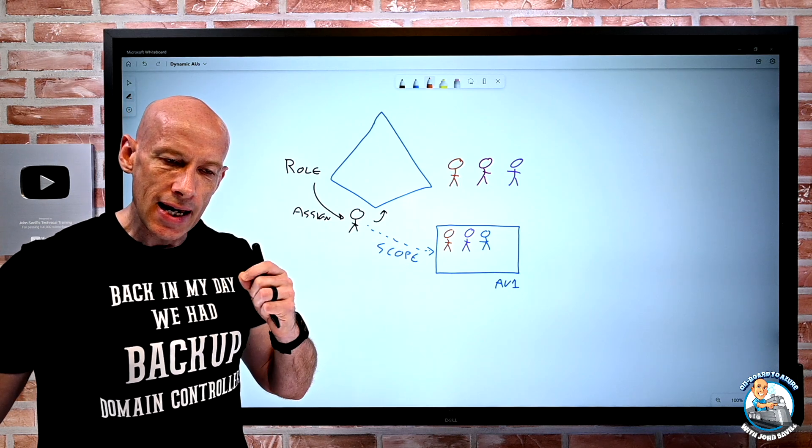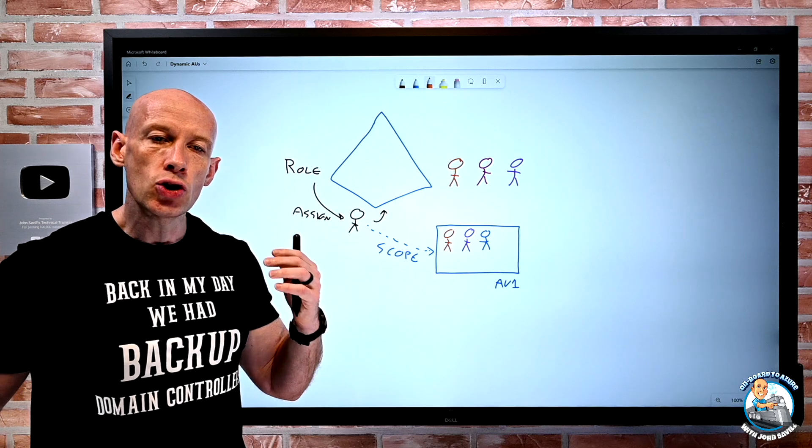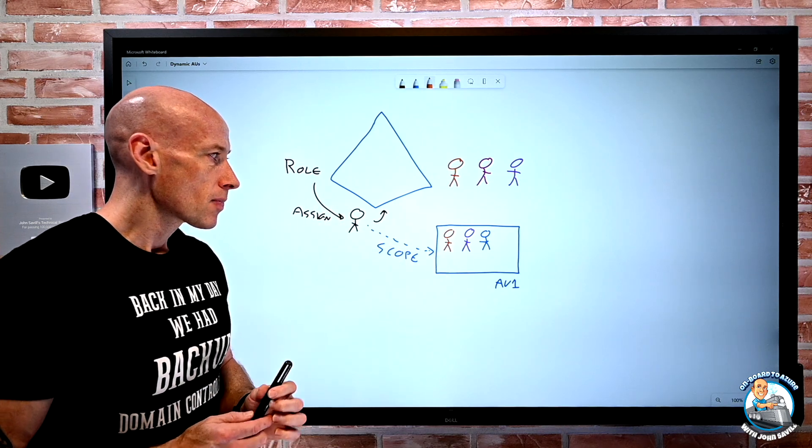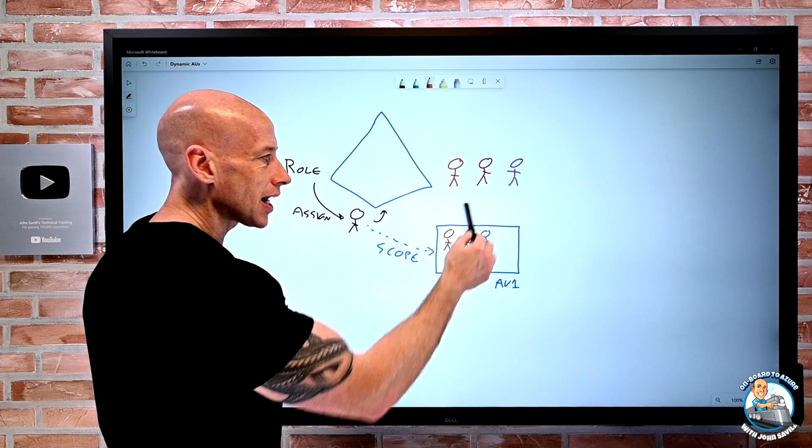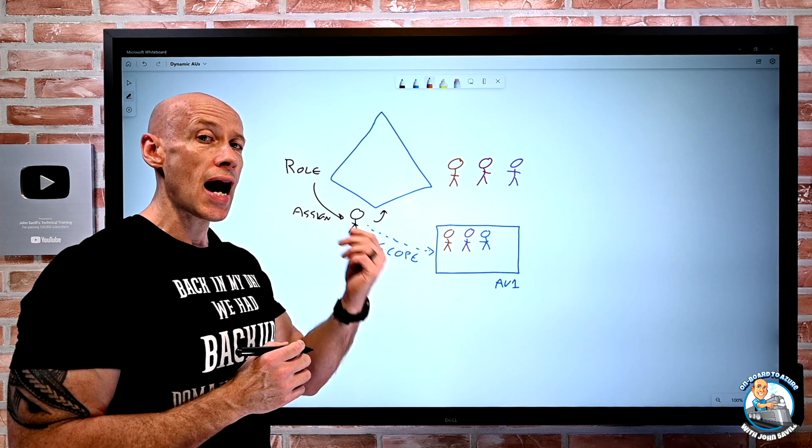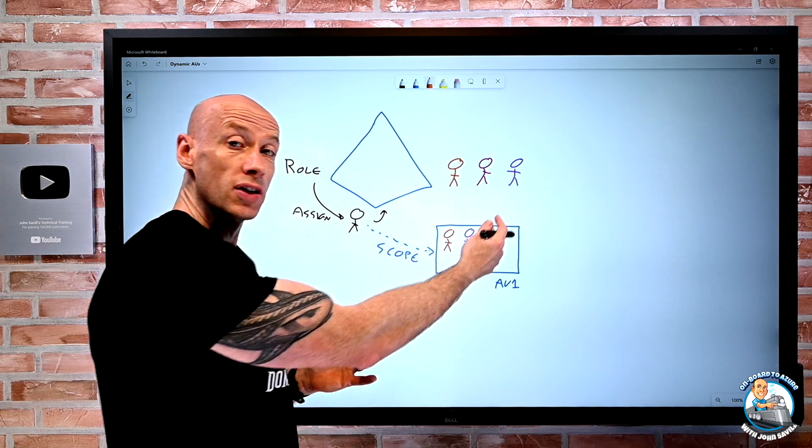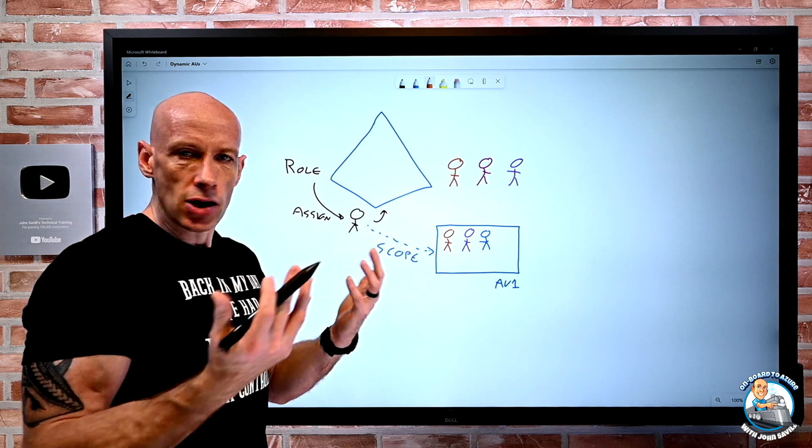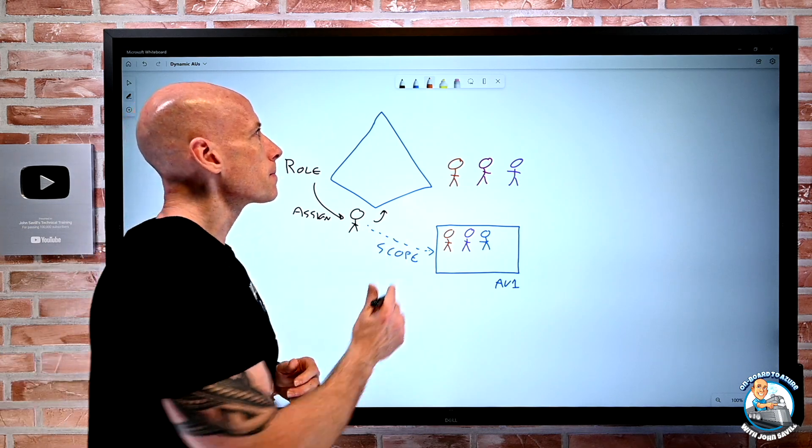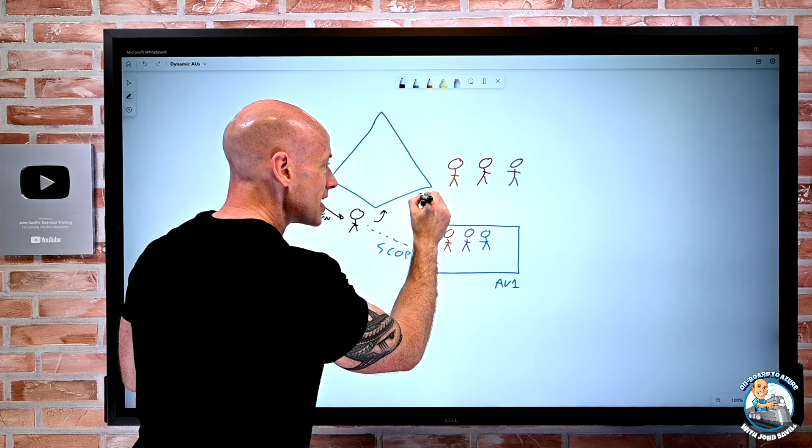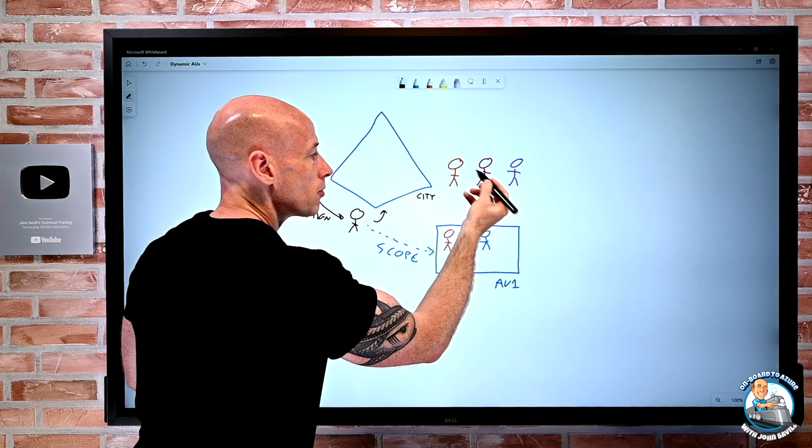We can now apply that same capability to dynamic assignment to administrative units. So rather than me having to statically place them inside, I can now, based on attributes of the user or device objects, have rules that would add or remove them from the administrative units. If I think, for example, of an attribute, I might say city.